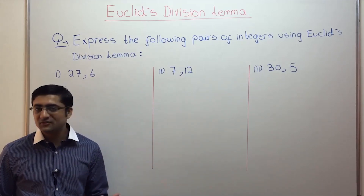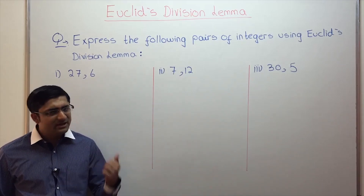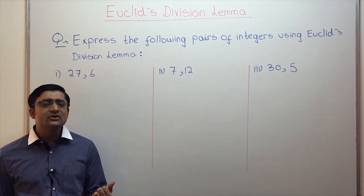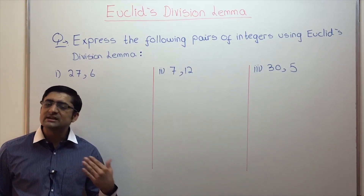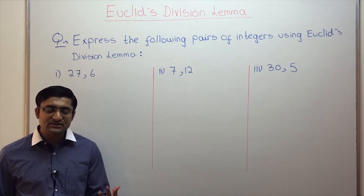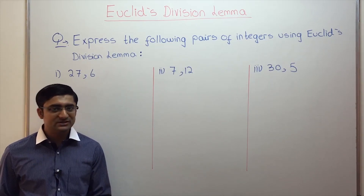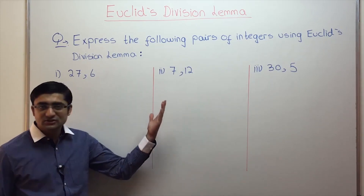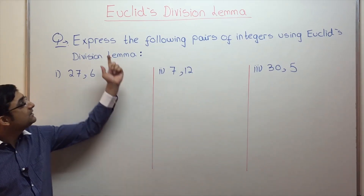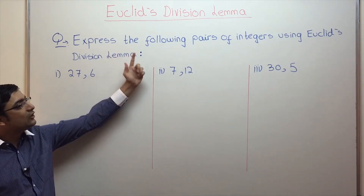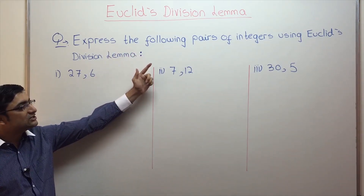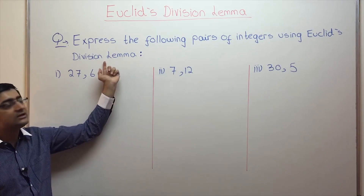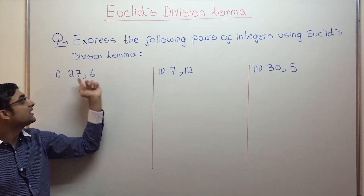Previously we learned the concept of Euclid's division lemma. In this video we're going to learn how to express any two positive integers using Euclid's division lemma. Let me take an example: express the following pairs of integers using Euclid's division lemma.